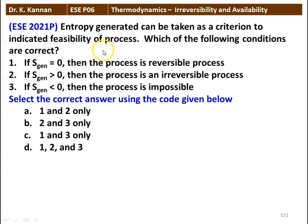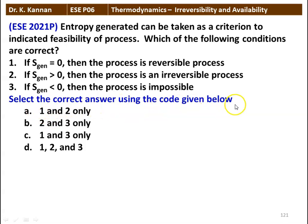The next question: entropy generation can be taken as a criterion to indicate the feasibility of a process. The conditions are: if entropy generation equals 0, the process is reversible; if entropy generation is greater than 0, the process is irreversible; if entropy generation is less than 0, the process is impossible. The answer is all three statements — 1, 2, and 3 — are correct with respect to entropy generation.